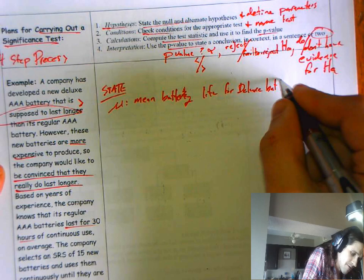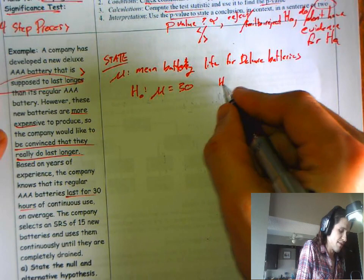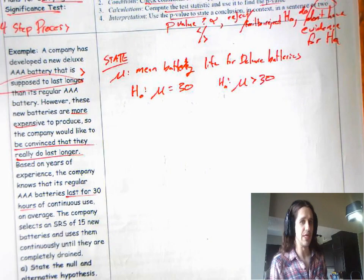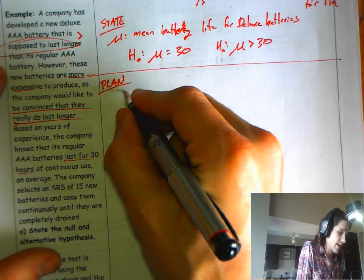And my null hypothesis is that it's no different. If the new batteries aren't any better than the old ones, then their mean life is 30 hours. But I put all this work in and I'd like to see that they are better than that. But I'm going to need some evidence for that. So there's my state step. My plan step, we don't actually have the tools for this yet.